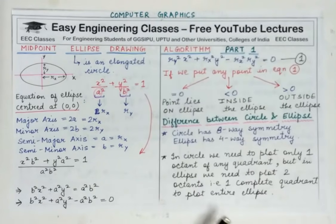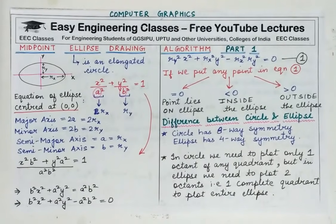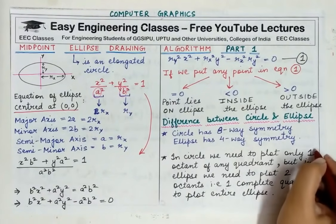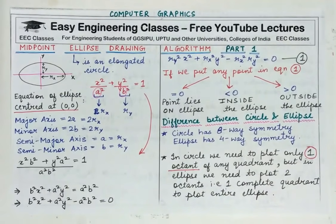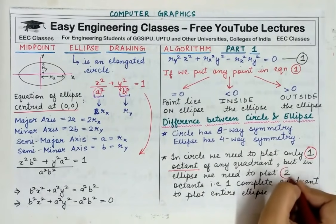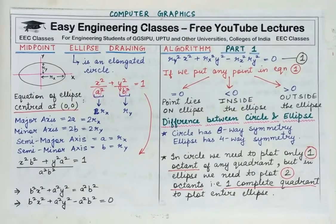Here I have written the major difference between circle and ellipse. In the circle, it is 8-way symmetry. In the ellipse, it is 4-way symmetry. In the circle, we have to plot only one octant for the entire circle. In the ellipse, we need to plot two consecutive octants, i.e., one complete quadrant. We then use those quadrant points and reflect them to generate the whole ellipse.